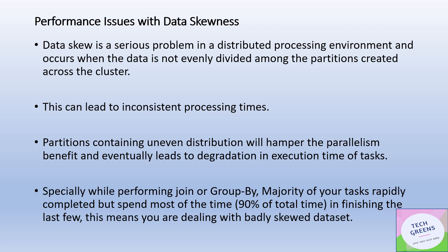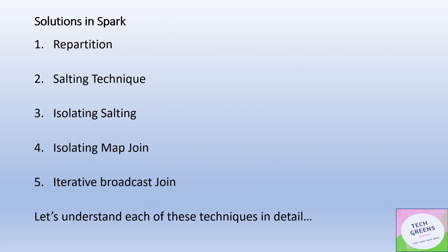Data skewness results in inconsistent processing times and prevents you from harnessing the real optimum benefits of parallelism. It is most prominently seen in scenarios involving joins and aggregate functions like GROUP BY. On the Spark UI, you'll observe 90% of tasks finished while the last few keep hanging.